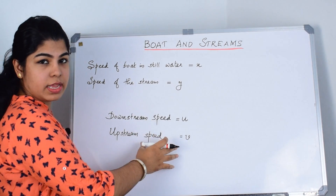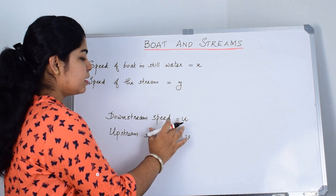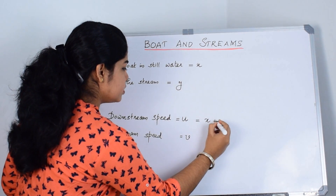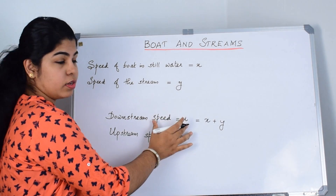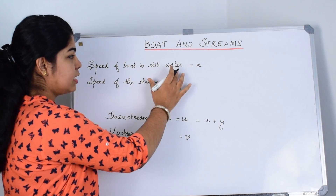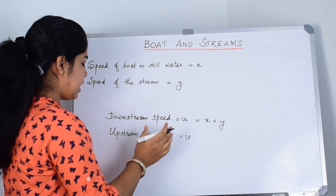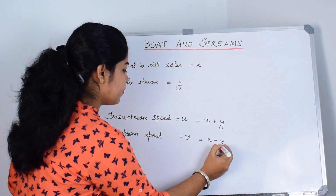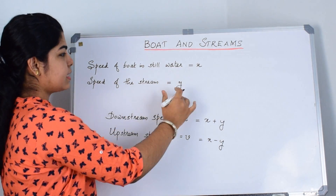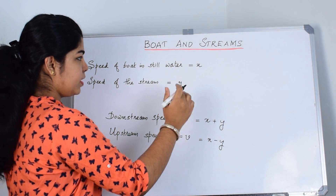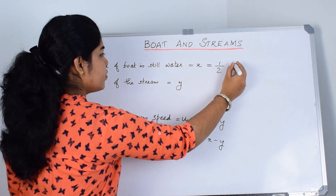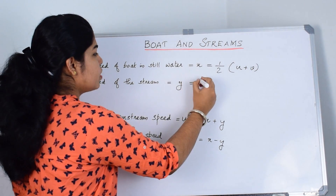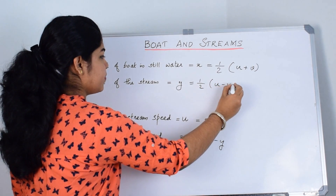Now let us see the formulas. Downstream speed U is equal to X plus Y — the sum of the speed of the boat in still water and the speed of the stream. Upstream speed V is equal to X minus Y. To find X and Y in terms of U and V: X is equal to half of (U plus V), and Y is equal to half of (U minus V).